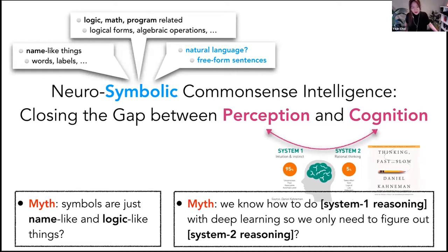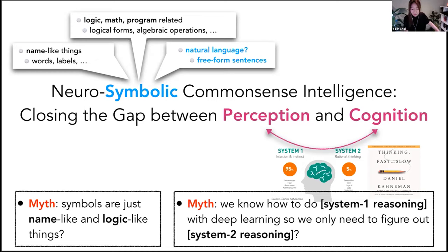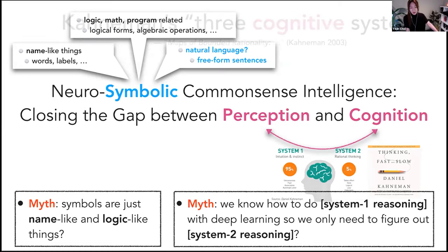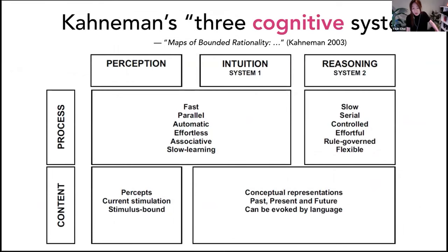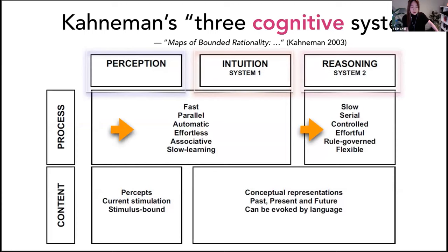On a related note, at this point, everyone knows about System 1 and System 2 — the intuitive, fast inferences versus the slow and more rational reasoning — popularized by Daniel Kahneman's Thinking Fast and Slow. That created the belief that maybe we are done with System 1 reasoning with deep learning, and we only need to figure out System 2. Perhaps less known is his earlier work published in 2003 about three cognitive systems, not just two. Perception and intuition are both fast, associative, effortless inferences, whereas reasoning is the slow one.